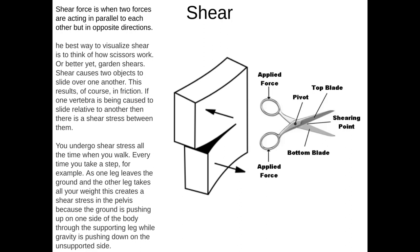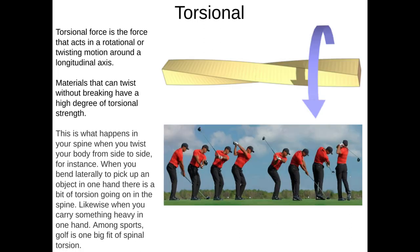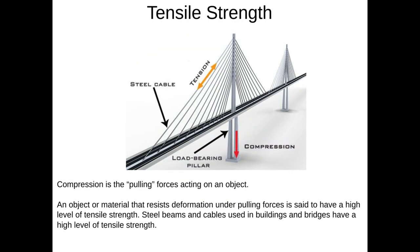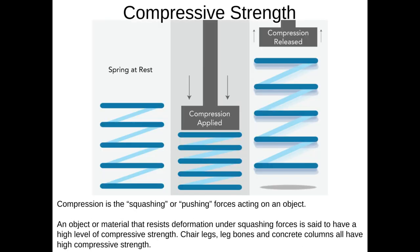So those are your five different types of force. Shear is motion acting parallel but in opposite directions. Torsional is rotational. Bending is the combination of compression and tension, causing a flat plane to turn to a curved angle. Tension is the pulling stress, and compression is the pushing force.